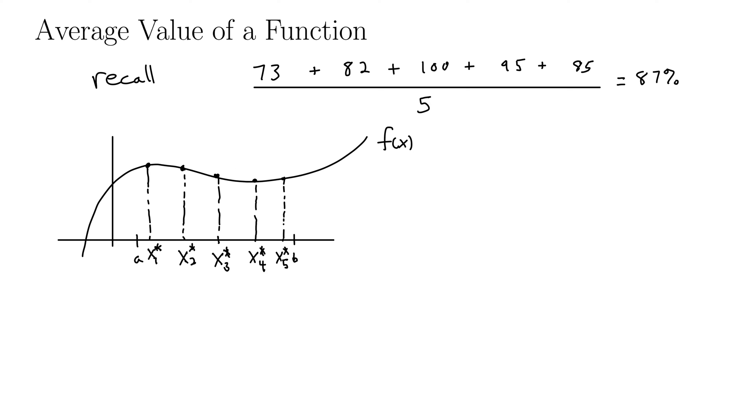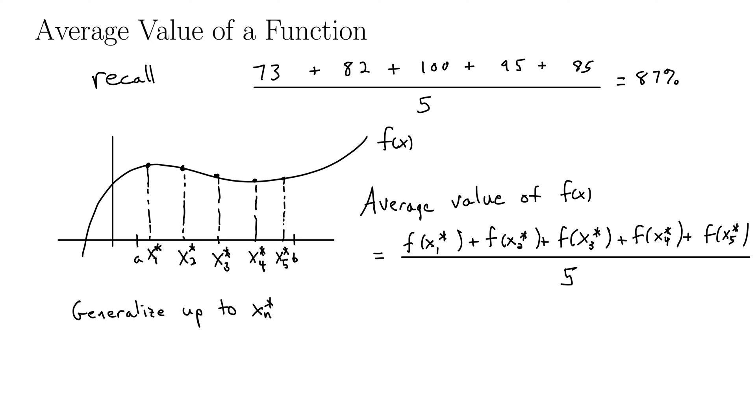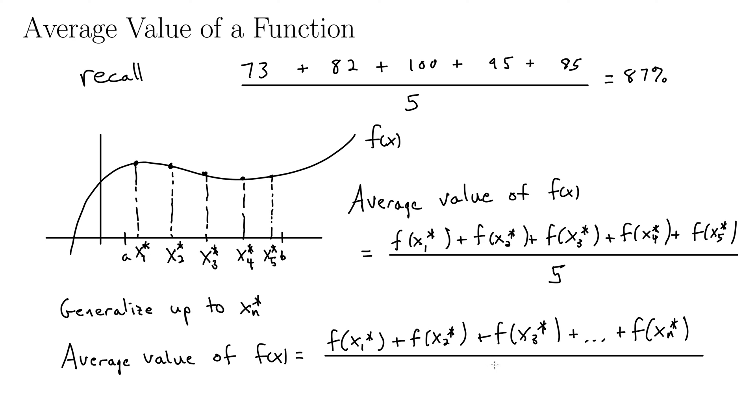Well, then the average value of the function would be the sum of the function evaluated at all these points, x1 star, x2 star, x3 star, etc., divided by 5 since we have 5 different x values. So now if we generalize this to let it go up to x sub n star, we'd get a similar sum now over n since there's n x sub i values.